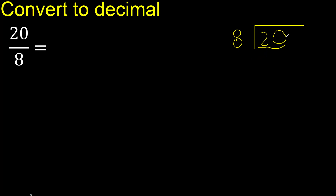Therefore with 20 and 8, multiply by which number is nearest to 20 but not greater than 8. Multiply by 3 is 24 — 24 is greater. Multiply by 2 is 16. 16 is not greater; 20 minus 16 is 4.